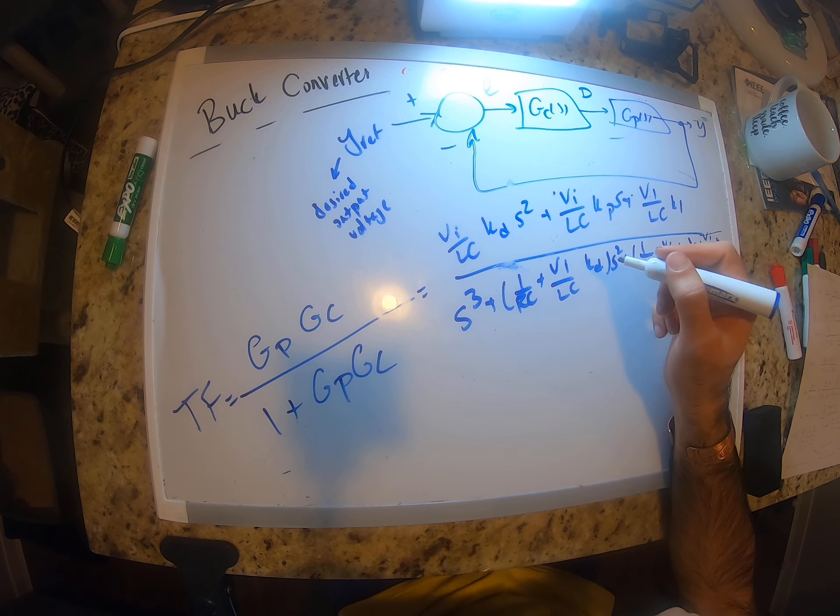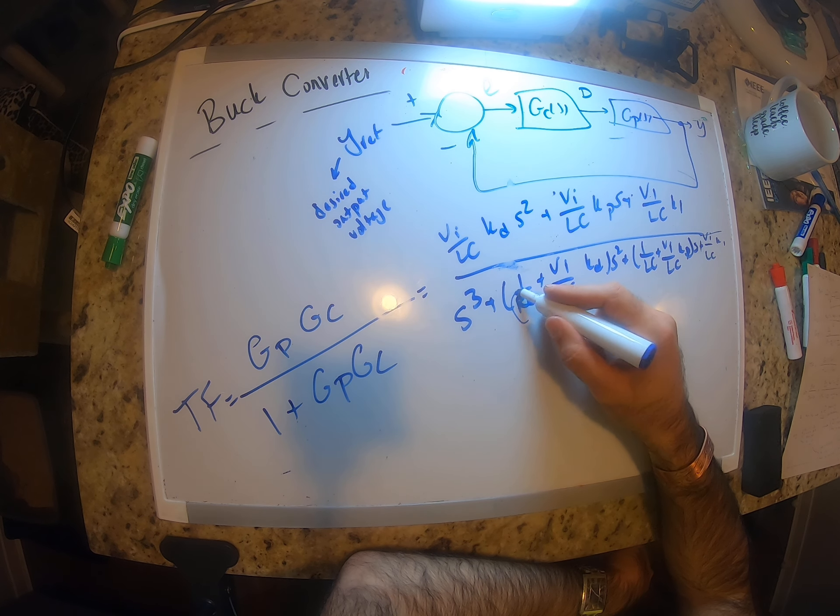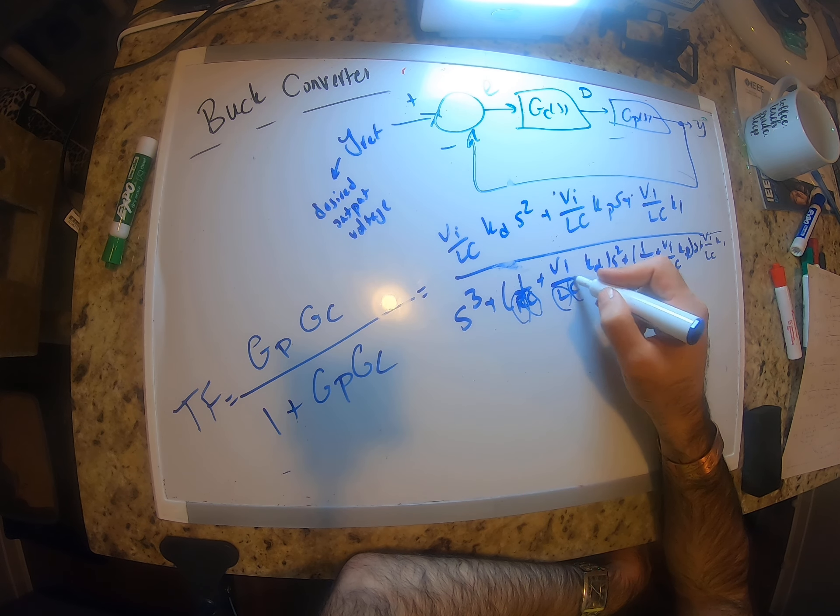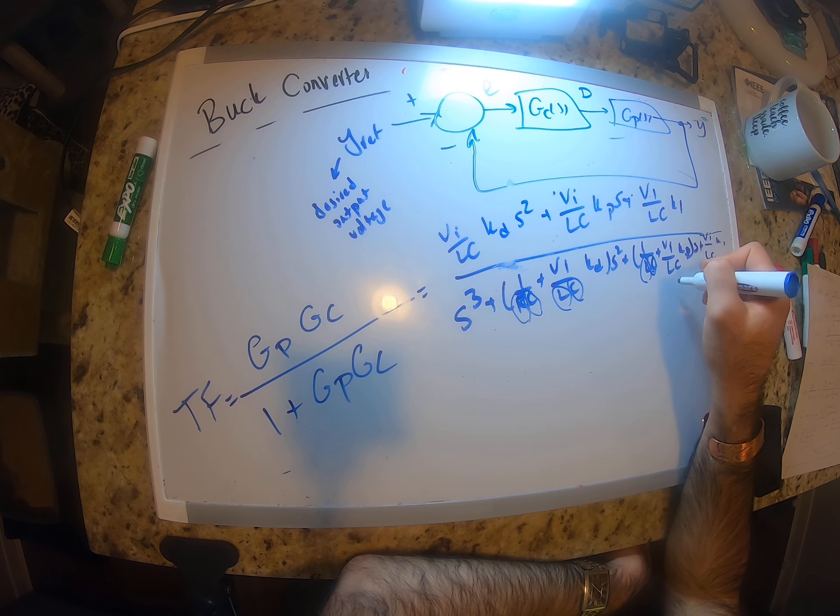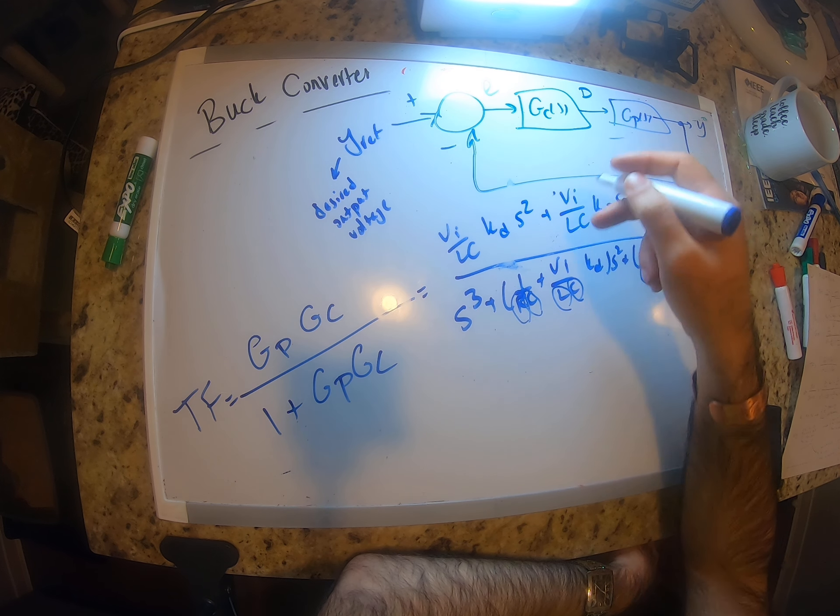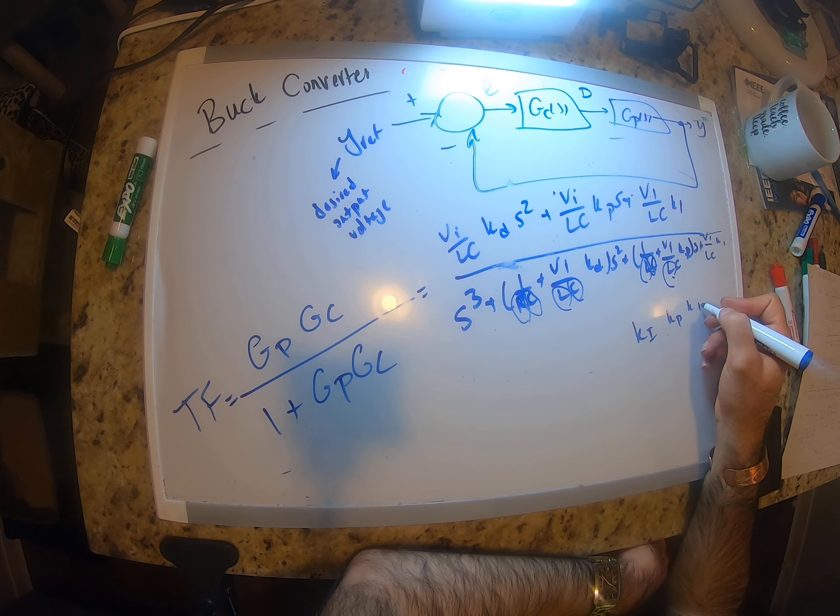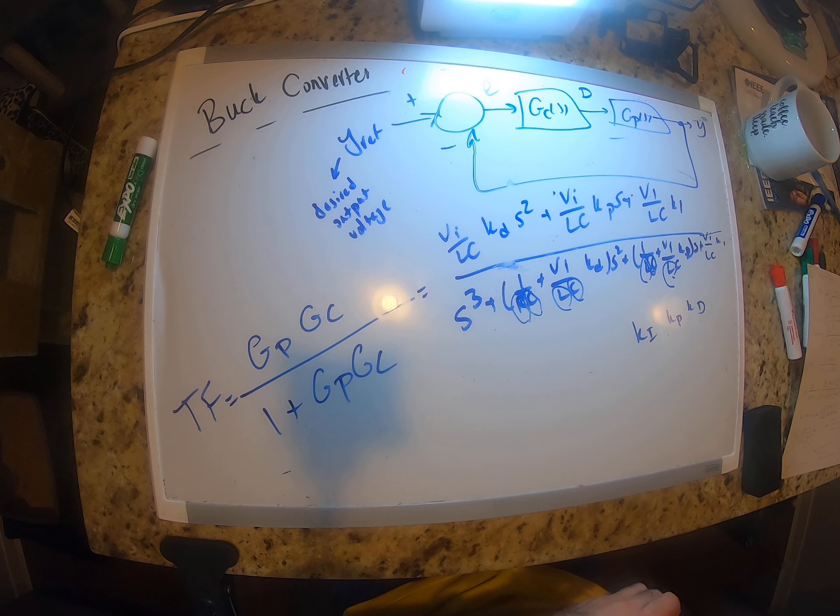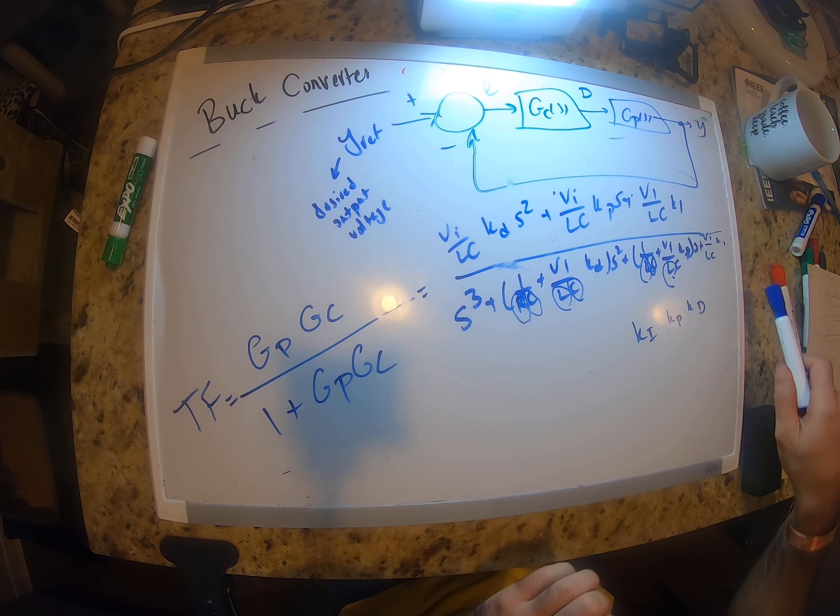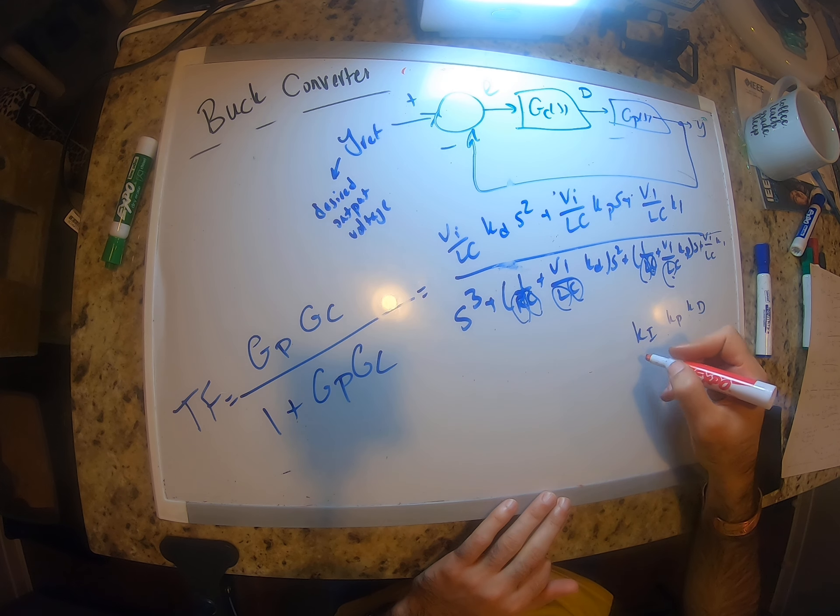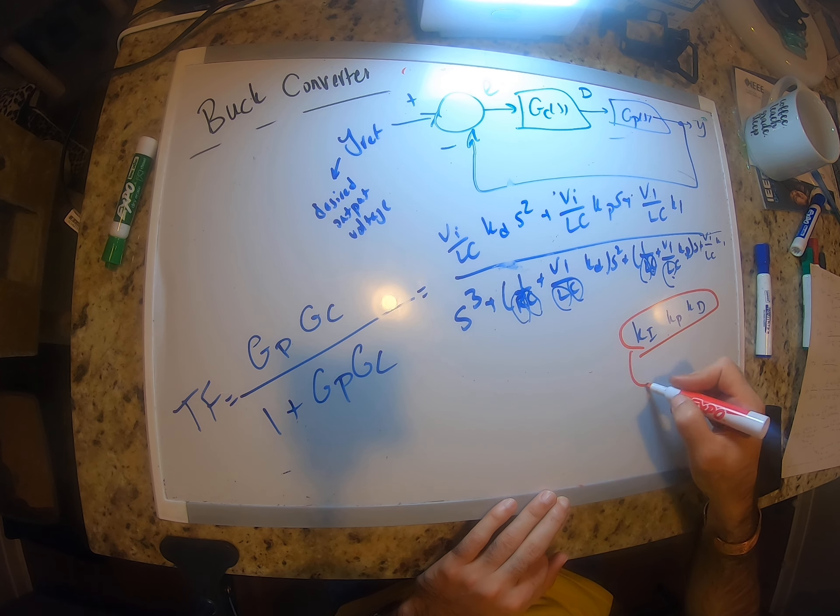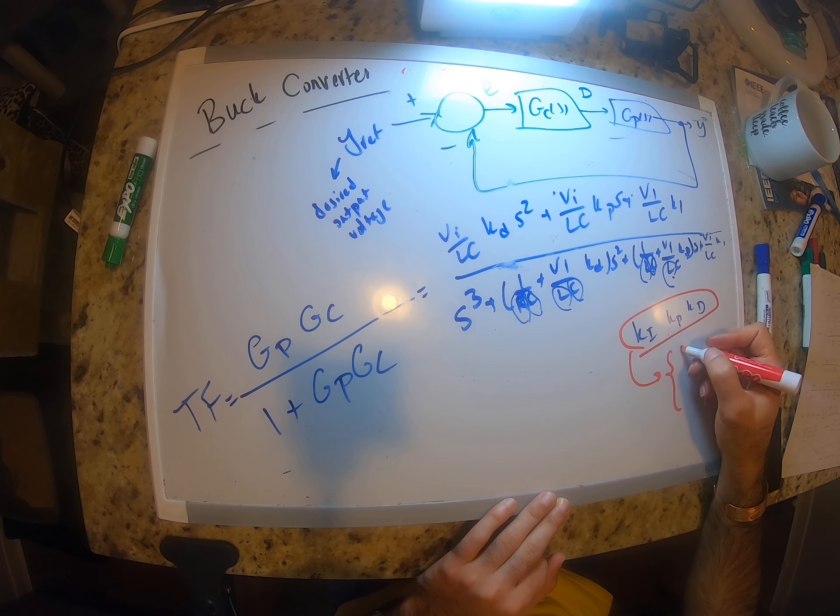Just remember that Vi is our input voltage, which is constant, so everything is constant: RC, L. Like, say we have them. The parameters that we can play with is Ki, Kp, and Kd, right? So there are two things that you have to be careful when you change these values. First, you might